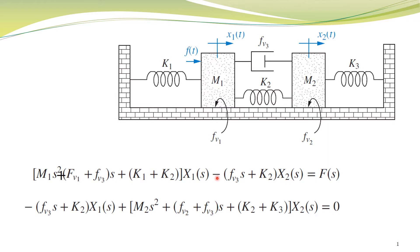Then we have a negative sign — x2 multiplied by the sum of impedances which are connected to both x1 and x2. Here Fv3 is connected to both this displacement and this displacement. So we have the impedance of this damper, and likewise this spring is connected to both displacements — one end is connected to x1 — so this impedance is common between both displacements.